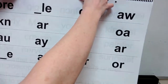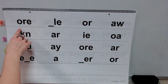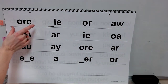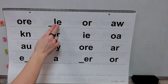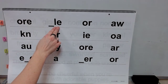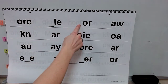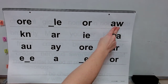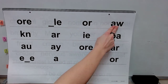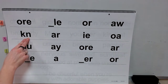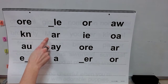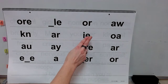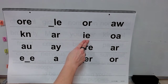Now you'll say the sounds for some spellings. Get ready. Sound: or. Sound: l. Sound: or. Sound: ah. Sound: n. Sound: r. Sound: i.